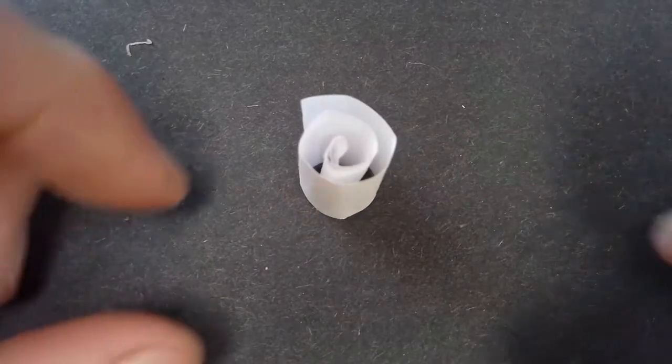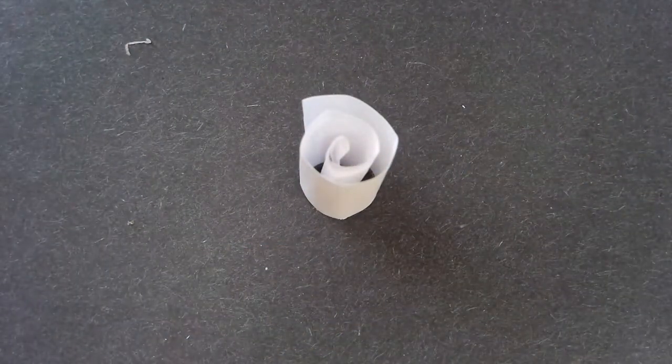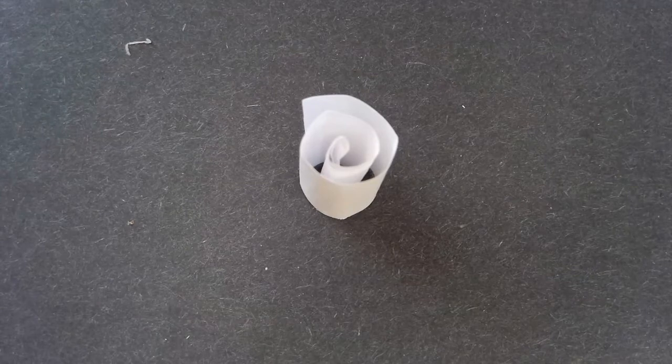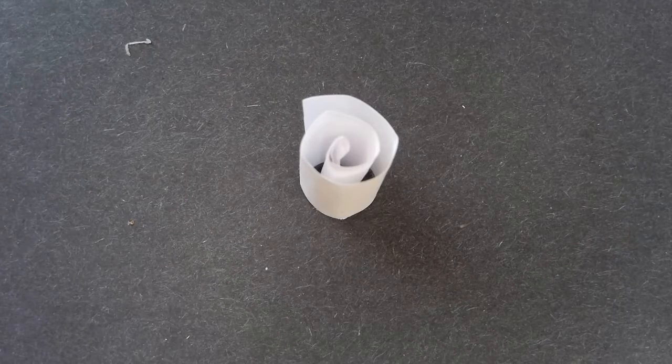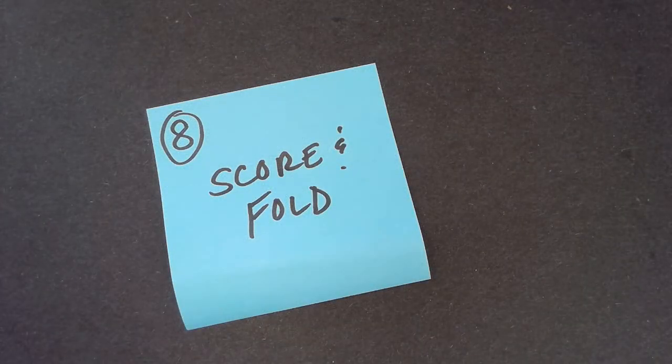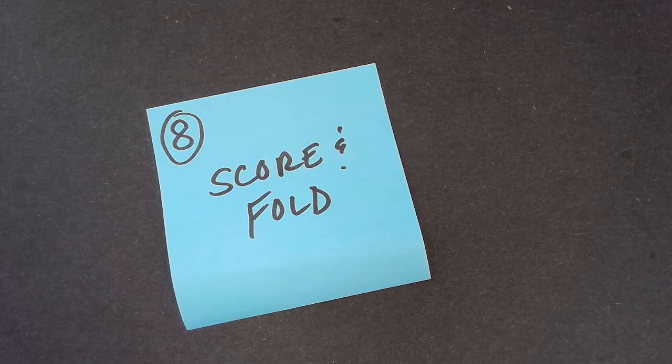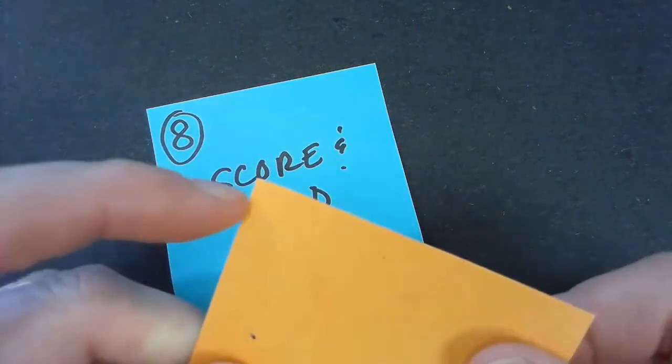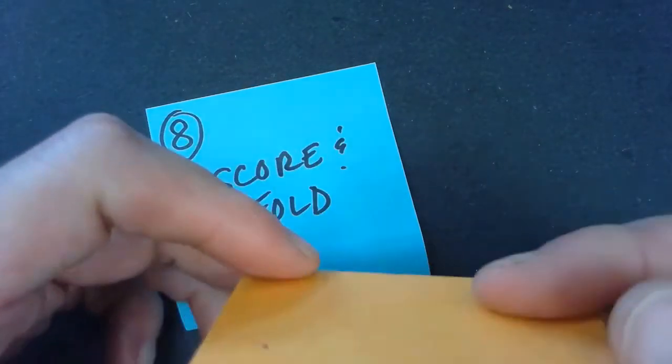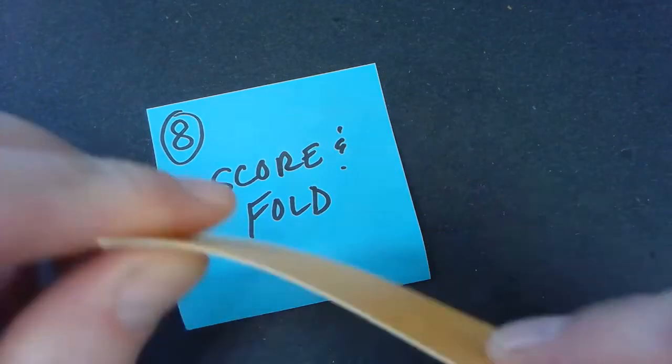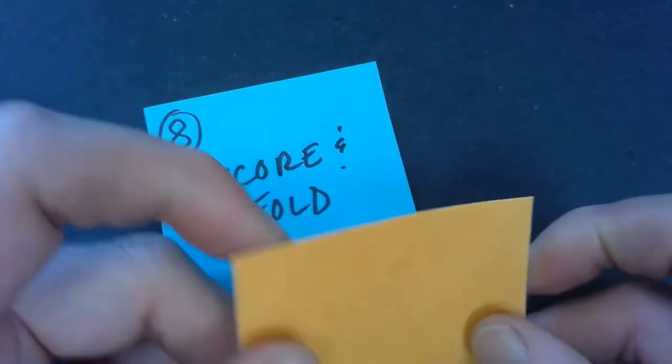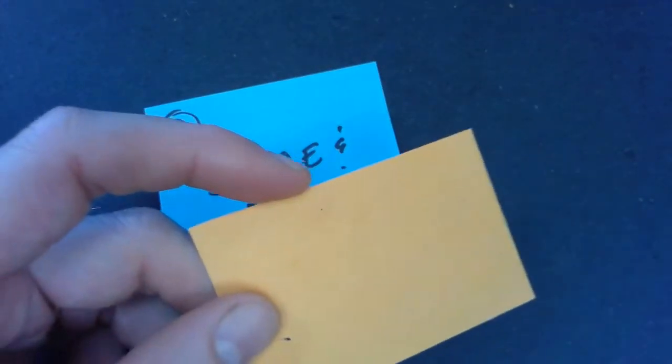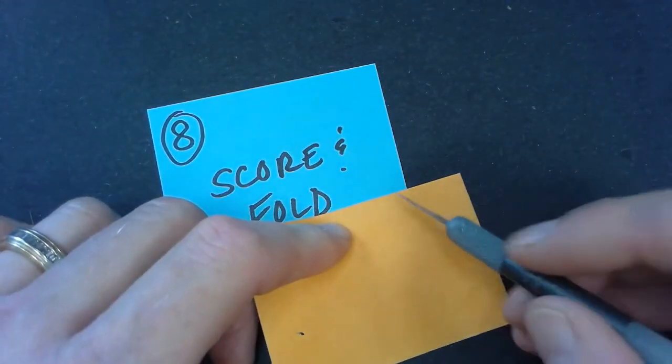That could be used for all different kinds of things. So number eight is scoring. Scoring is used to bend or fold paper that is a little bit thicker, so maybe a poster board or some kind of material, railroad board, or something else that you would have to actually cut into to bend the correct way.